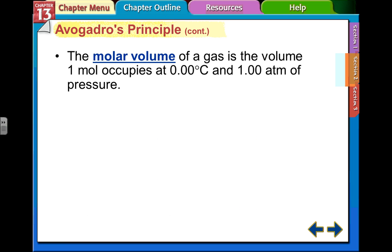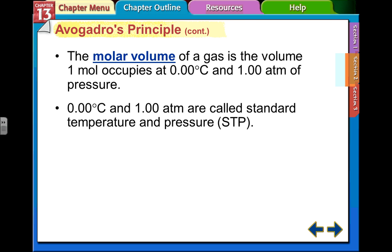The molar volume of a gas is the volume one mole occupies at 0.00°C and 1.00 atm of pressure. 0.00°C and 1.00 atm are called standard temperature and pressure, STP.